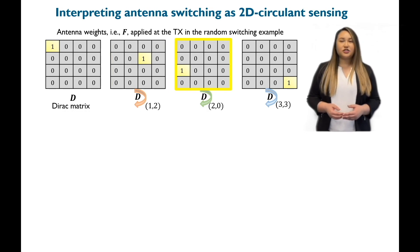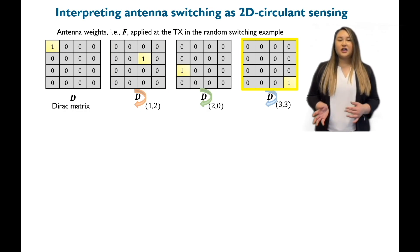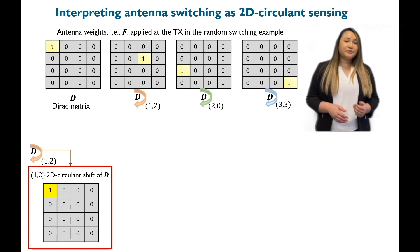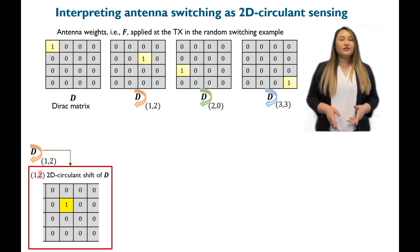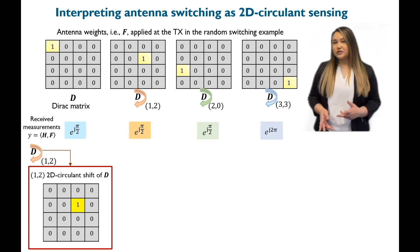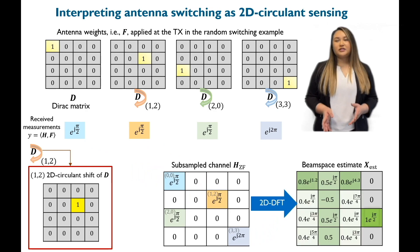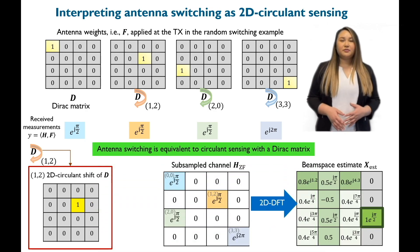These sensing matrices have a special structure, i.e., any Dirac matrix is a 2D circulant shift of the matrix D. For example, the second matrix is obtained by circulantly shifting every column of D by one unit and every row of the result by two units. The use of such antenna weights allows fast beam alignment in millimeter wave systems.